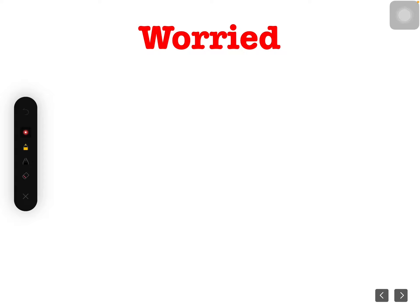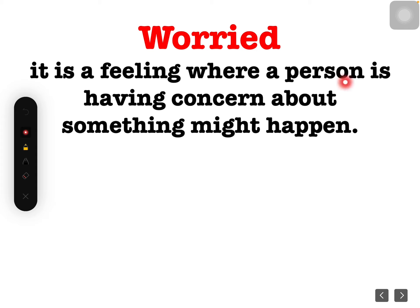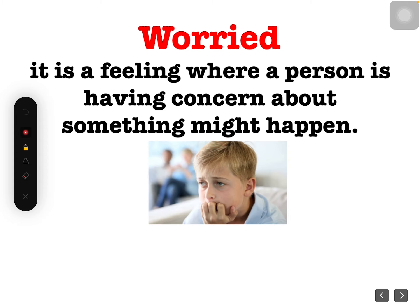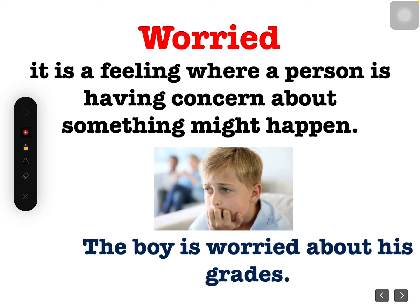Next, worried. Everyone, can you read? Worried. What is worried? It is a feeling where a person is having concern about something that might happen. Something might happen in the future — that is worried. If you have a feeling that you don't know what might happen tomorrow or the next day, then you are worried. Look at the boy — the boy is worried about his grades. Maybe he doesn't know if his grades are good or bad, so he is worried.